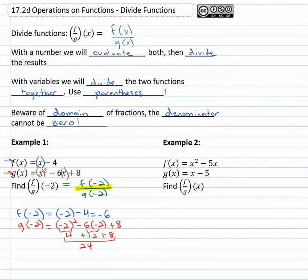This function asked us to divide, so we need to divide f of negative 2, which is negative 6, divide by g of negative 2, which is 24. Notice the denominator is not zero—that's important, the denominator cannot be zero. We can reduce this fraction; dividing both by 6 gives us negative one-fourth, and we now have the quotient of the two functions.